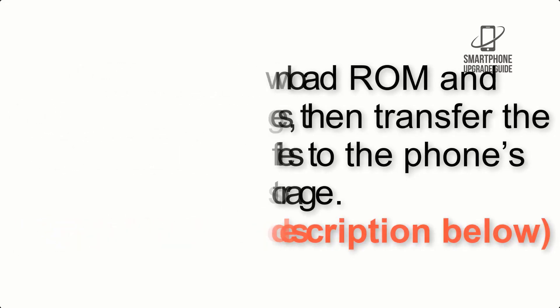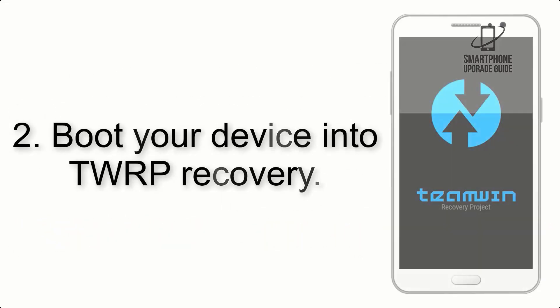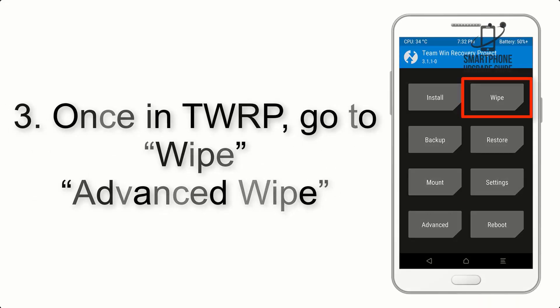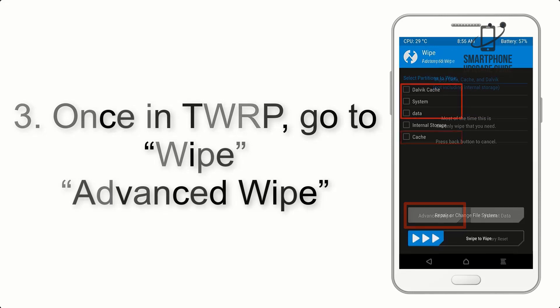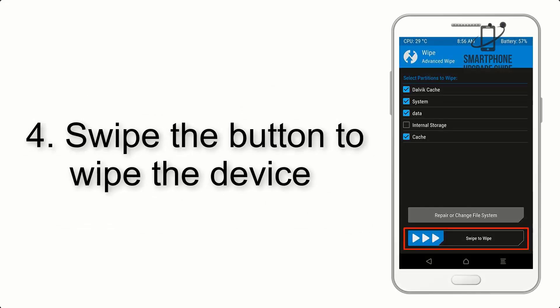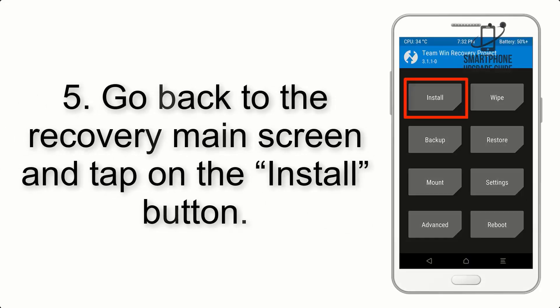Step 2: Boot your device into TWRP recovery. Once in TWRP, click on Advanced Wipe and select the checkboxes as shown in the image, excluding internal storage. Step 4: Swipe the button to wipe the device.